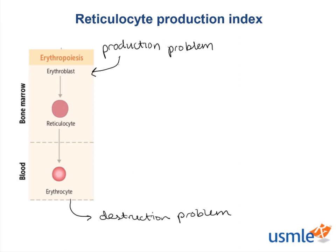In a production problem, for example, your bone marrow is not working and you cannot produce reticulocytes at all, no matter how much your body wants to. This sets up a very interesting dynamic where you can actually look at your reticulocyte count and your reticulocyte index in order to judge the function of the bone marrow.